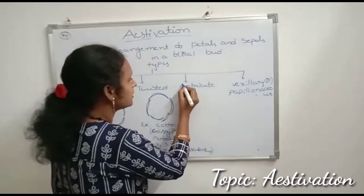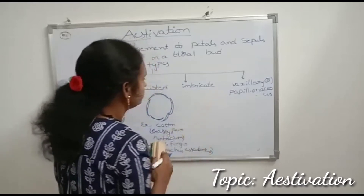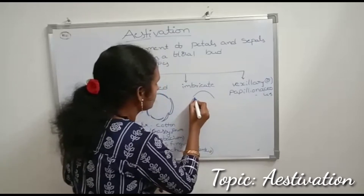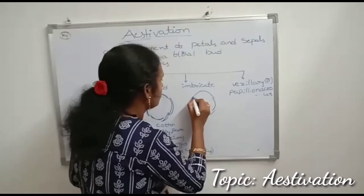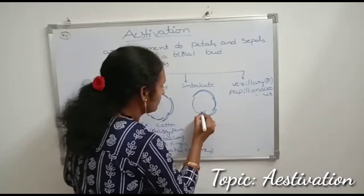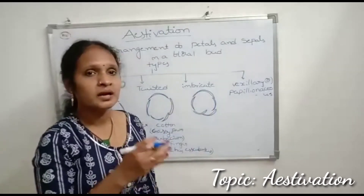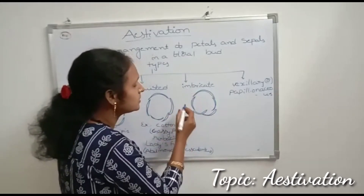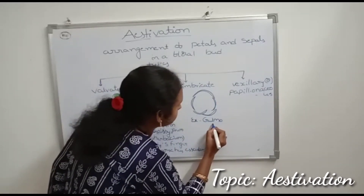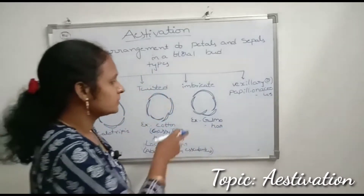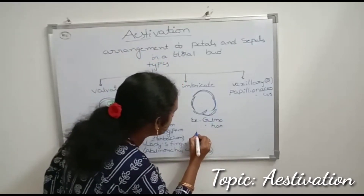The third type is imbricate estivation. Imbricate estivation means the arrangement of petals and sepals with overlapping but not in a particular direction. An example of imbricate estivation is gulmohar, which has orange-colored ornamental flowers. The scientific name of gulmohar is Delonix regia.